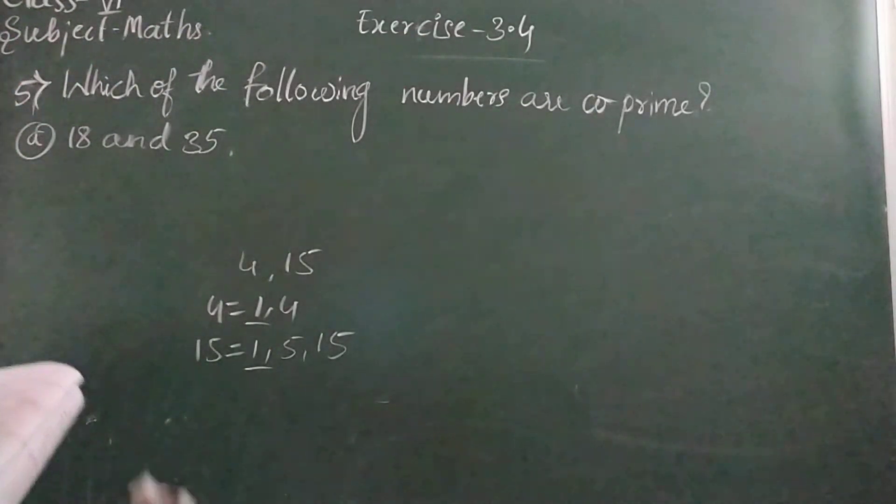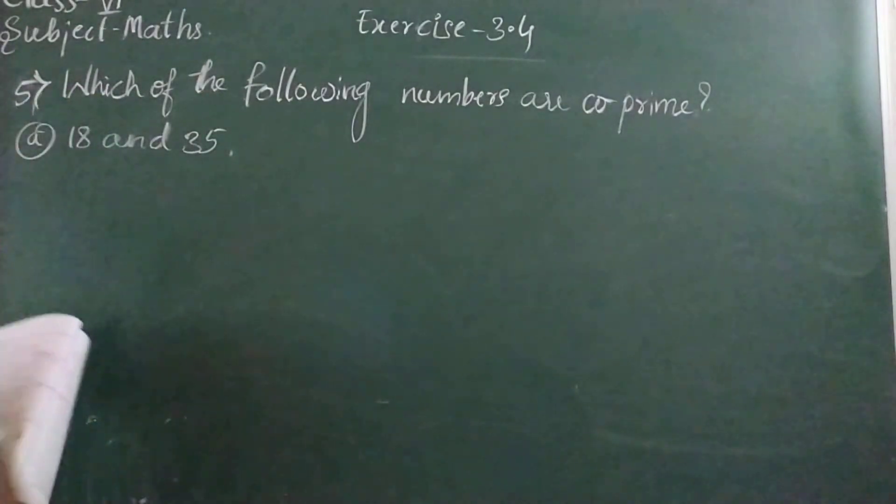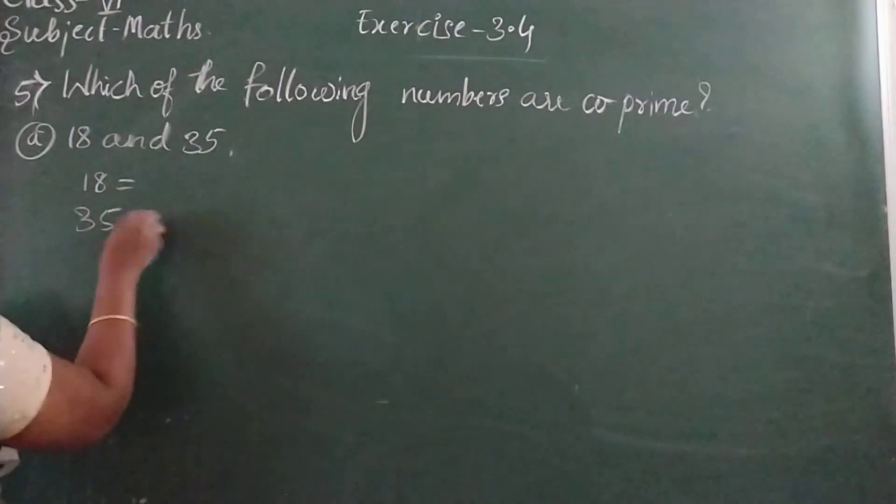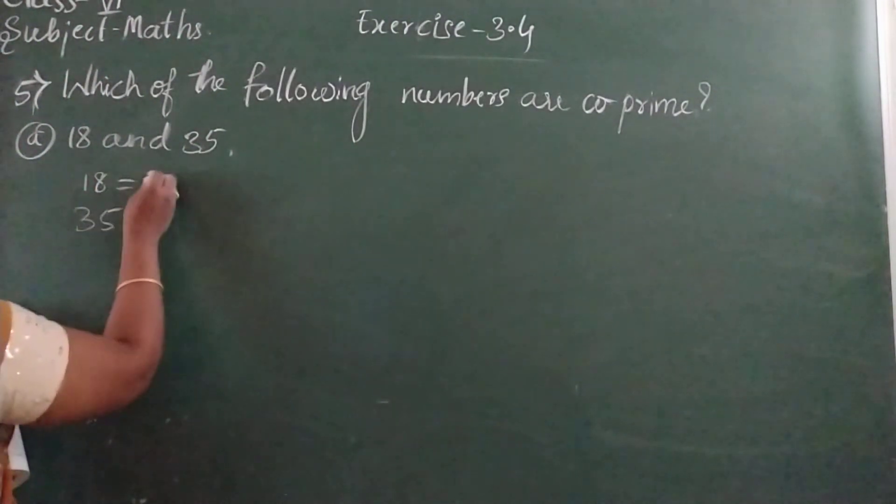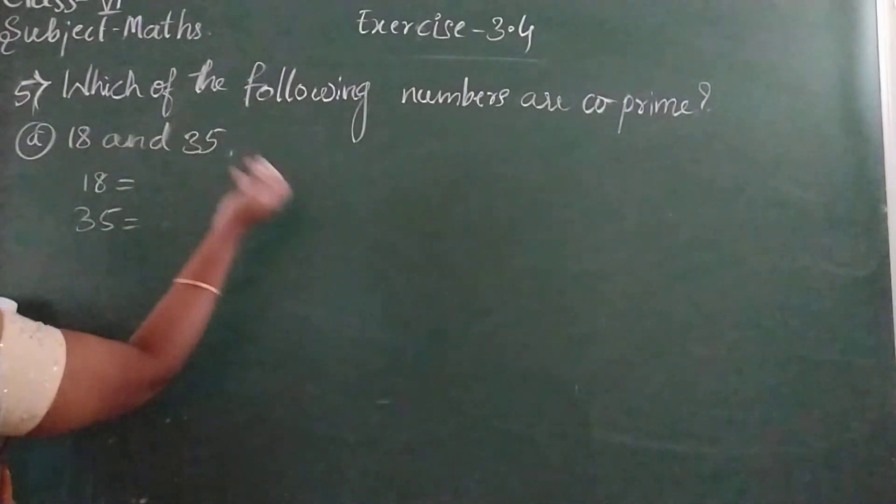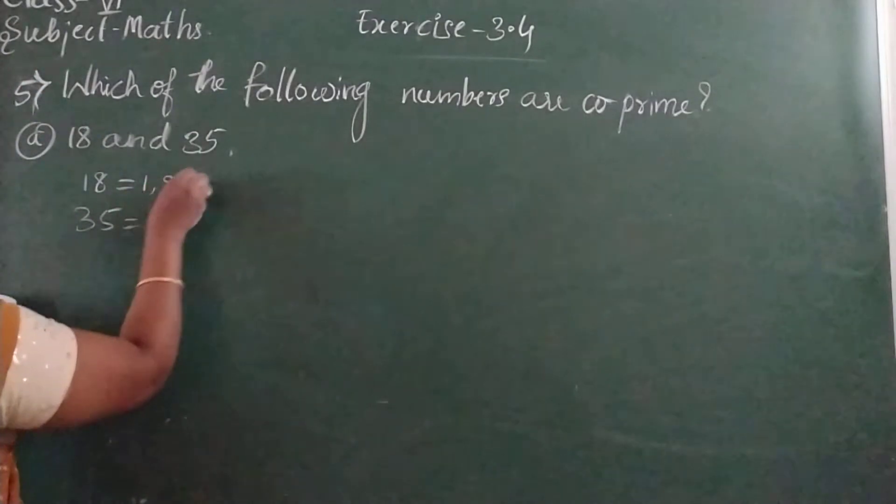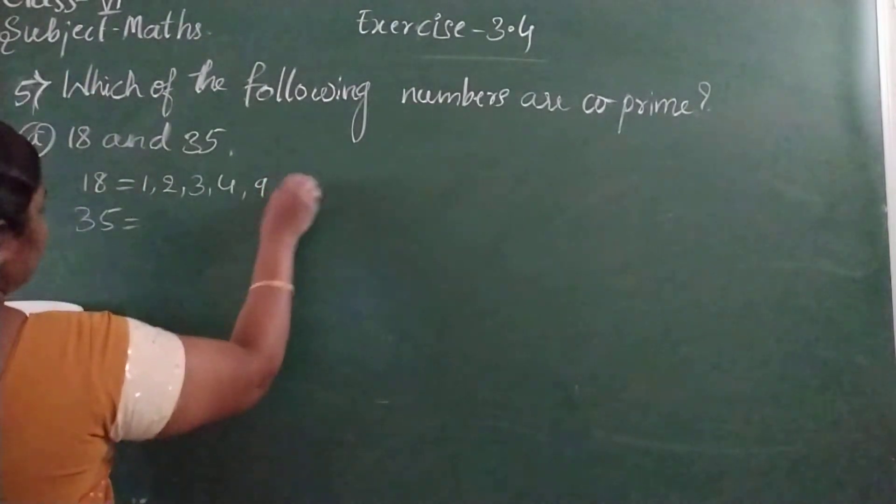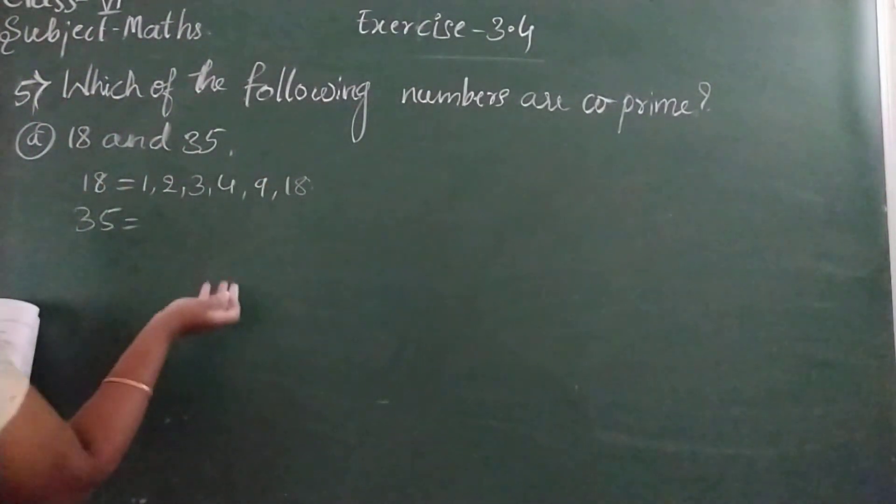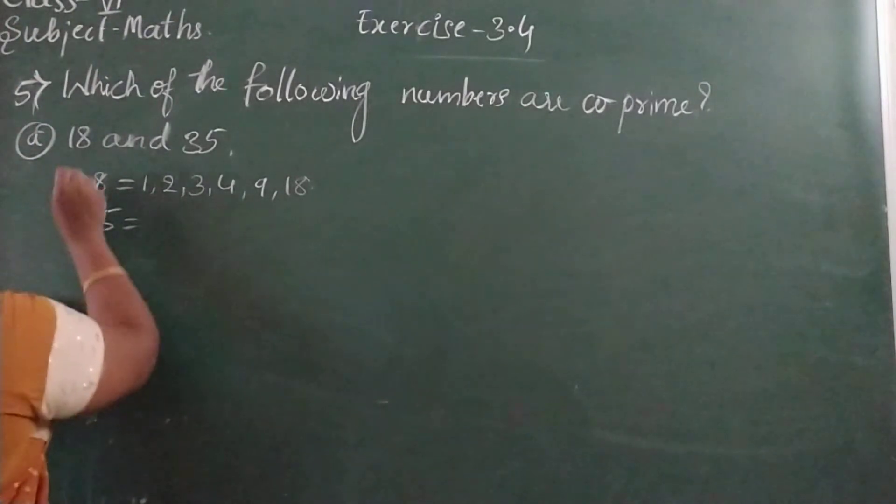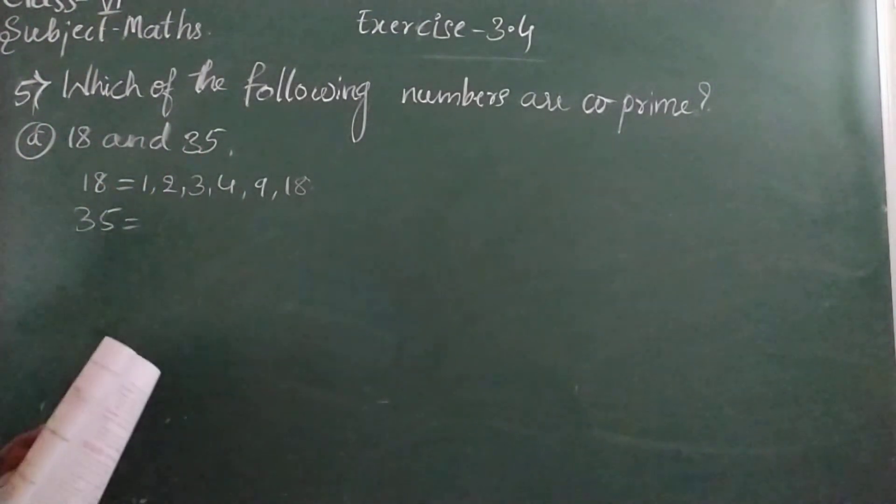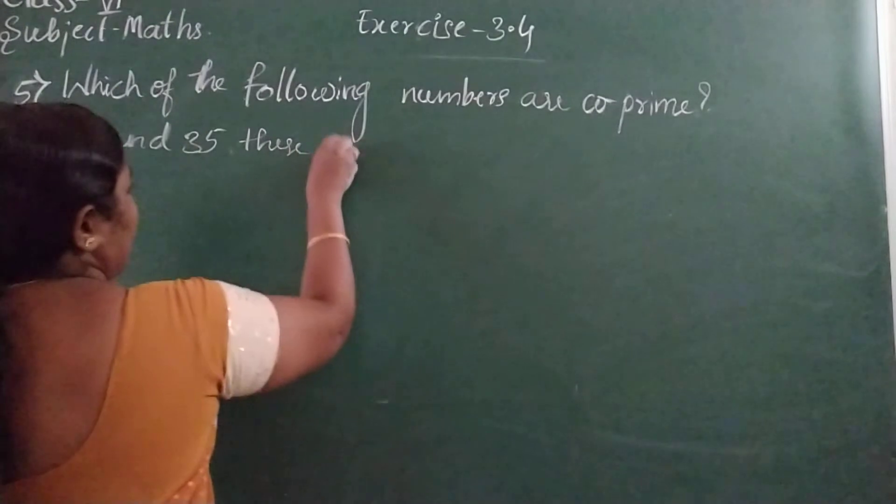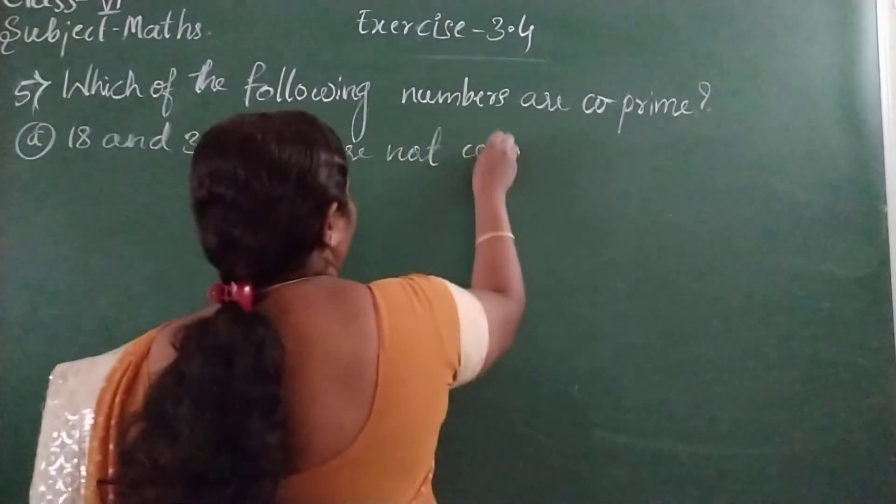So in the given list, we have to identify the co-primes. See the factors of 18 and 35. 18 is a composite number having more than three factors: 1, 2, 3, 6, 9, 18. 35 is also having four factors. So 18 and 35 are not co-primes. Just write: These are not co-primes.